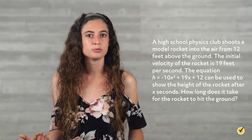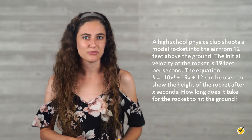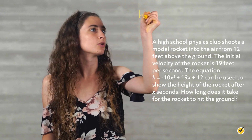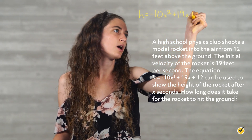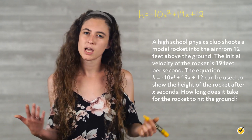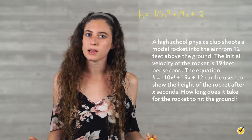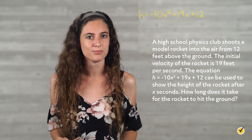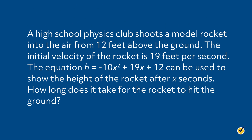I have one more problem for you to try. Let's take a look at a word problem that we can solve by using the quadratic formula. A high school physics club shoots a model rocket into the air from 12 feet above the ground. The initial velocity of the rocket is 19 feet per second. The equation h equals negative 10x squared plus 19x plus 12 can be used to show the height of the rocket after x seconds. How long does it take for the rocket to hit the ground? Pause the video here and try it yourself, and when you're done, we'll go over it together.